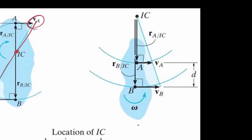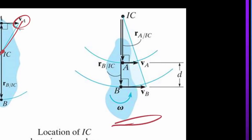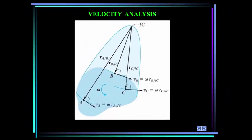In this case here, the velocity of A and the velocity of B are known but they're parallel. Again, we can just use similar triangles to determine the location of IC.